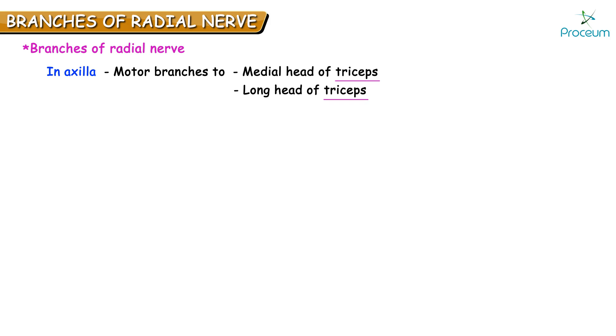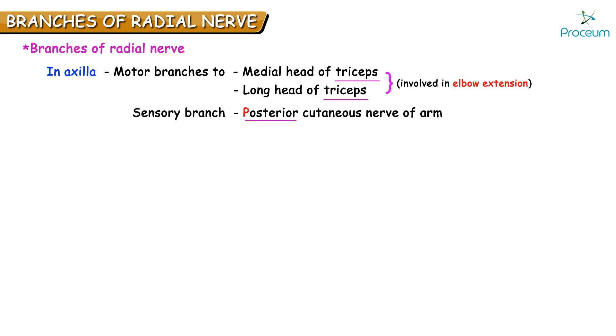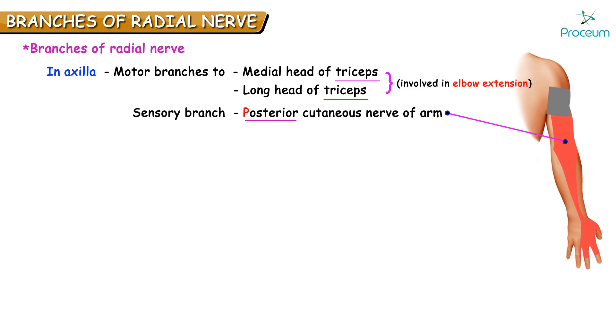Talking about the branches coming out from the radial nerve: while passing through the axilla, it gives motor branches to the medial head and the long head of triceps, which is involved in elbow extension. The medial head and long head of triceps are supplied by the radial nerve when it is still in the axilla. It also gives rise to the posterior cutaneous nerve of arm, which supplies the skin over the posterior aspect of the arm.